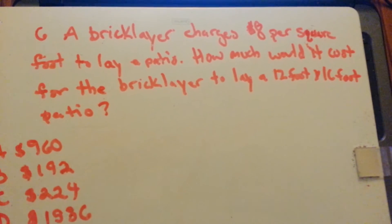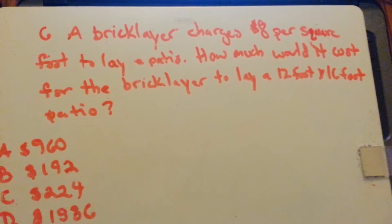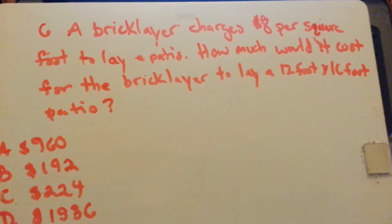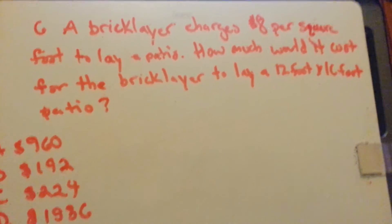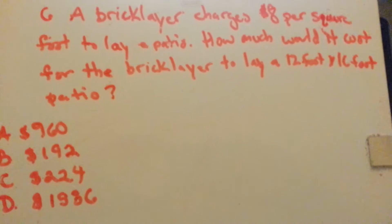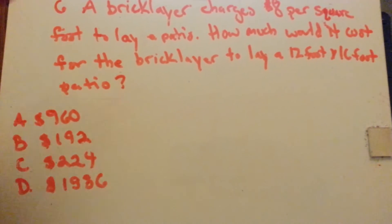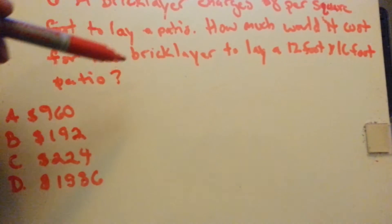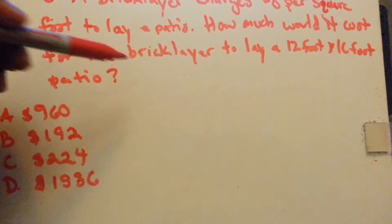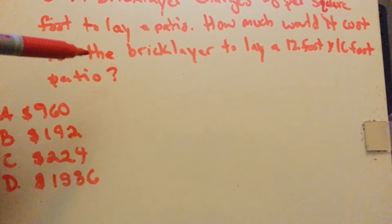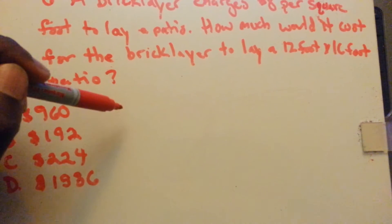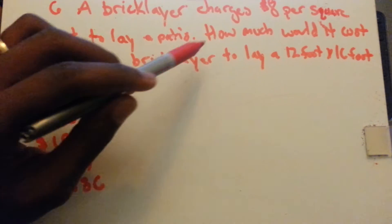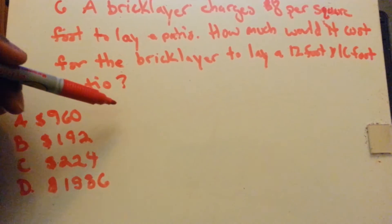A bricklayer charges eight dollars per square foot to lay a patio. How much would it cost for the bricklayer to lay a 12 foot by 16 foot patio? So this is a two-step problem. First we have to find the area for the place where the bricklayer is going to be laying the patio, and then we have to multiply that by the charge for him to lay that patio.